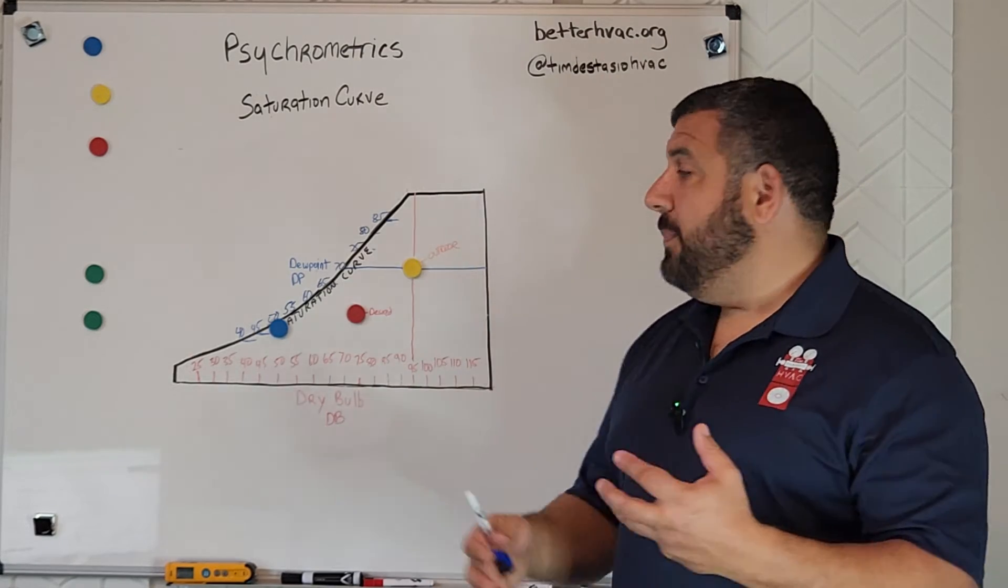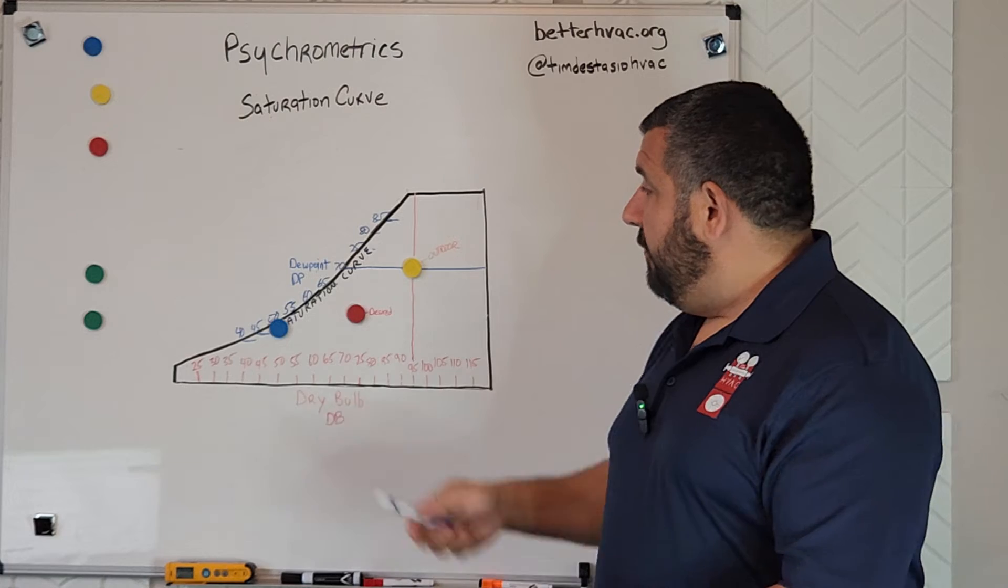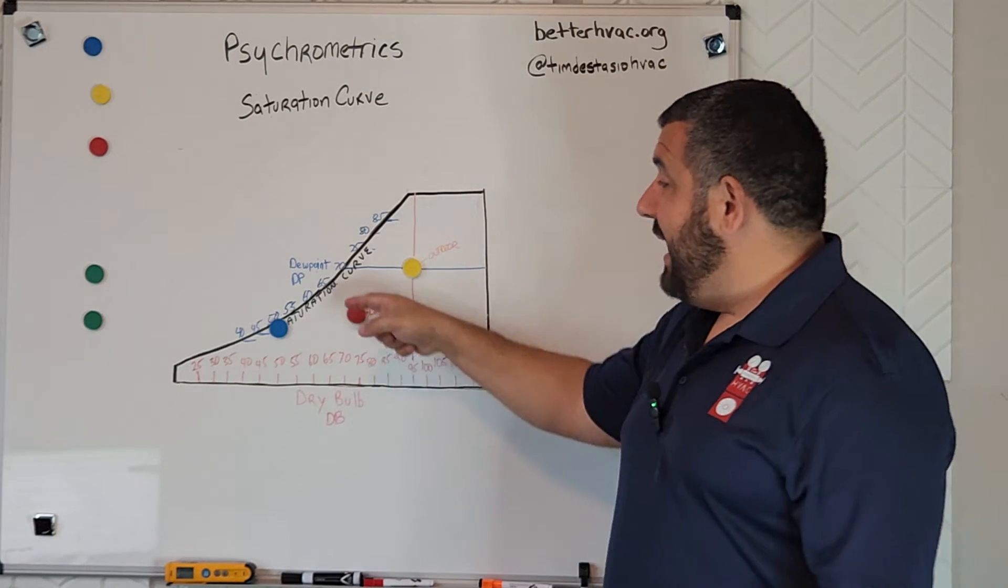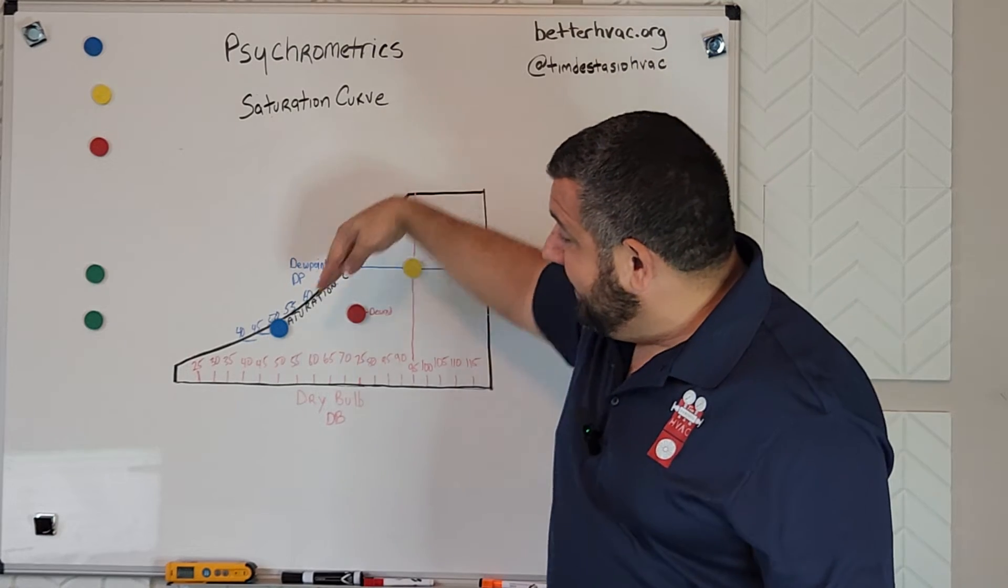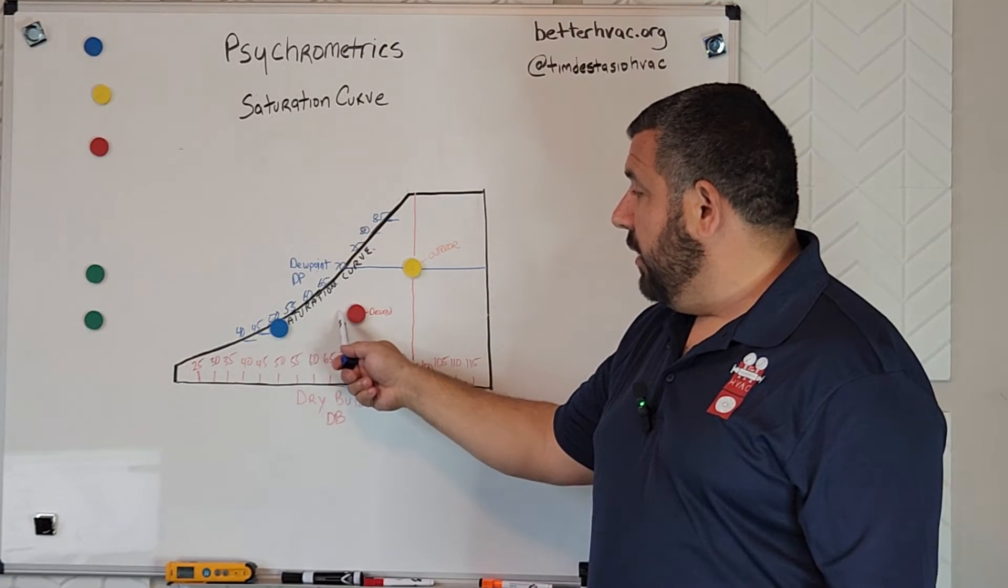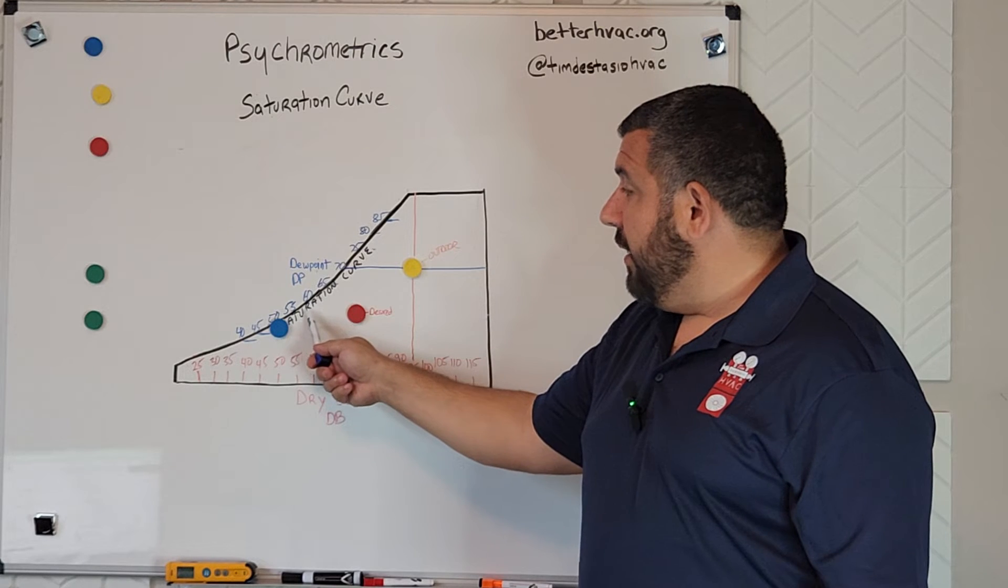And what I want you to think about this as being is a slide. So if you were walking up to the slide, once you got to the slide, the only way down or only way is down the slide, down that curve. And so that's what happens when our air conditioning comes on, it starts cooling the air down.